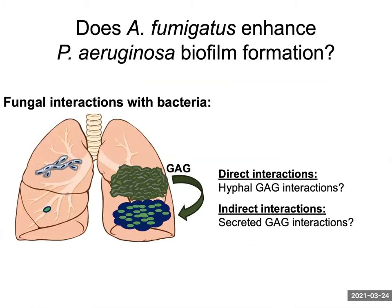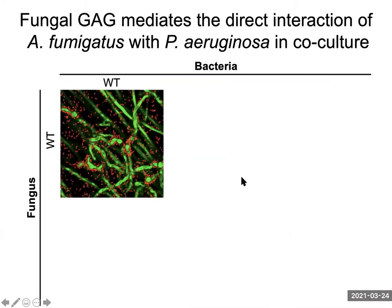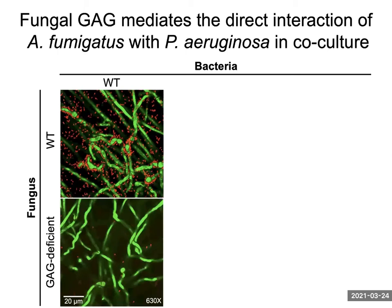Starting from the fungal side, we took a two-pronged approach. We investigated possible direct interactions through hyphal GAG with the bacteria and possible indirect interactions through secreted GAG with the bacteria. To assay for direct interaction, we first used confocal microscopy to image fungal biofilms — you can see them here in green — and added bacteria in red. We observed that these bacteria were clustering around the fungal hyphae, suggesting that they were adhering to the fungus. In contrast, with the GAG-deficient strain, we lost this phenotype where the bacteria were no longer binding to the hyphae, suggesting that GAG was mediating this direct interaction between these wild-type strains.